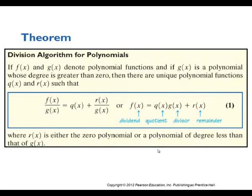First we're going to start with the remainder theorem. Basically, the division algorithm of polynomials: if f(x) and g(x) denote polynomial functions, f(x) would be the numerator and g(x) would be the denominator, and we get a quotient and remainder. Where r(x) is either the zero polynomial or a polynomial of degree less than that. So when we have a zero, this remainder part is going to come out to be zero — when we have an x-intercept, when we divide, what we should have left is zero.